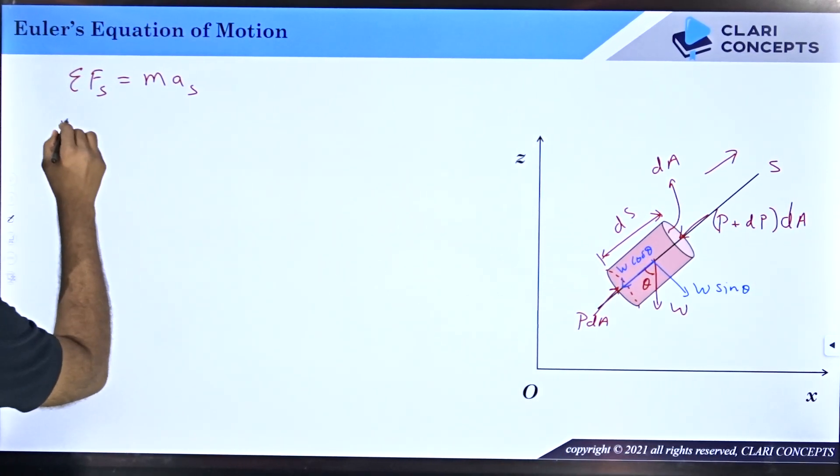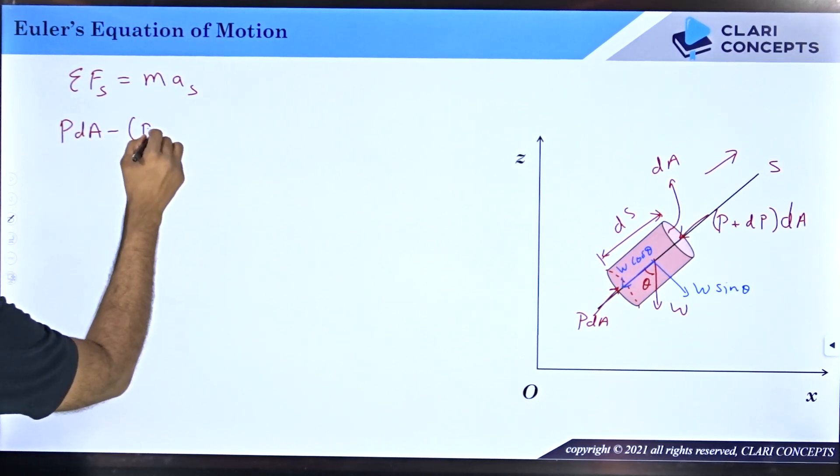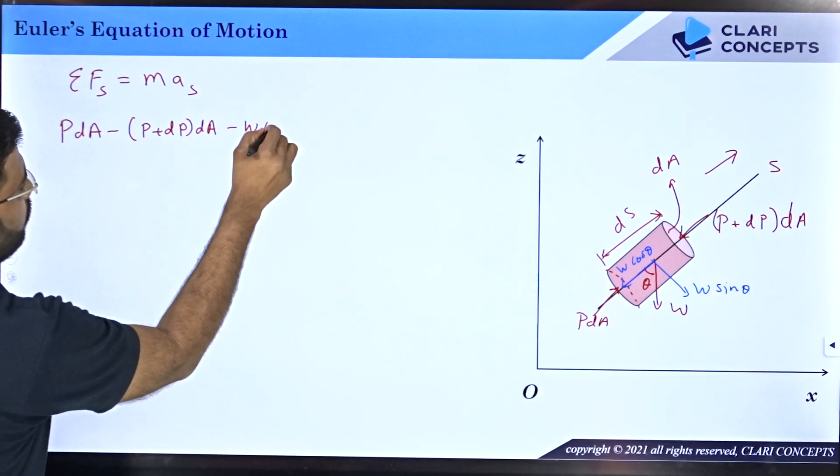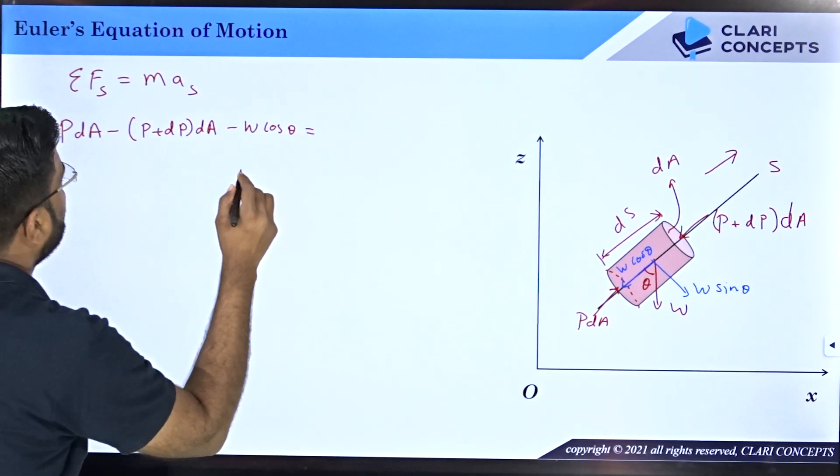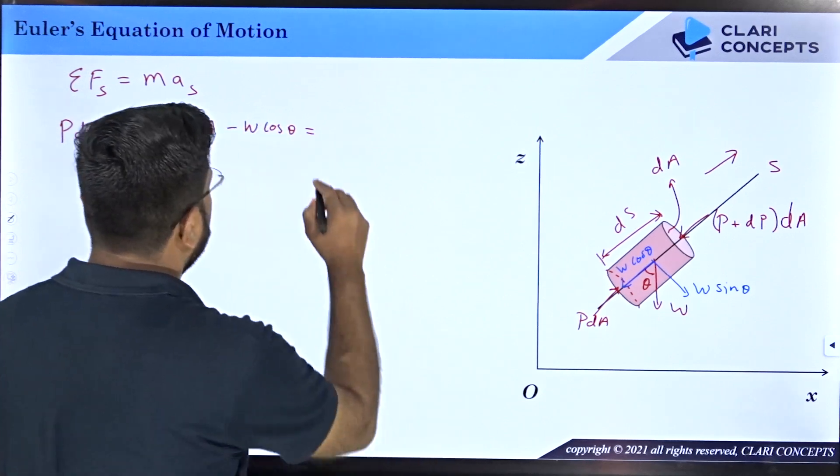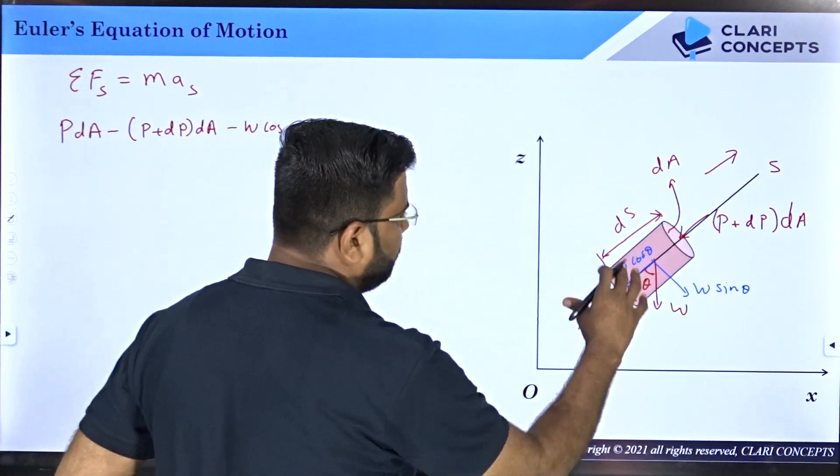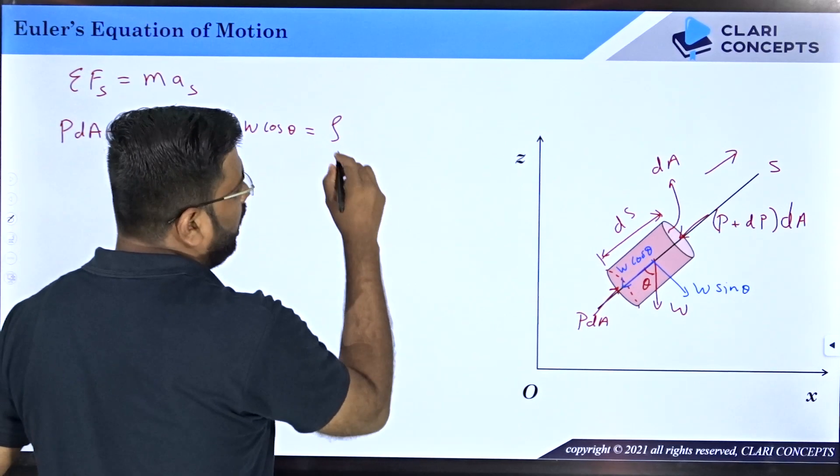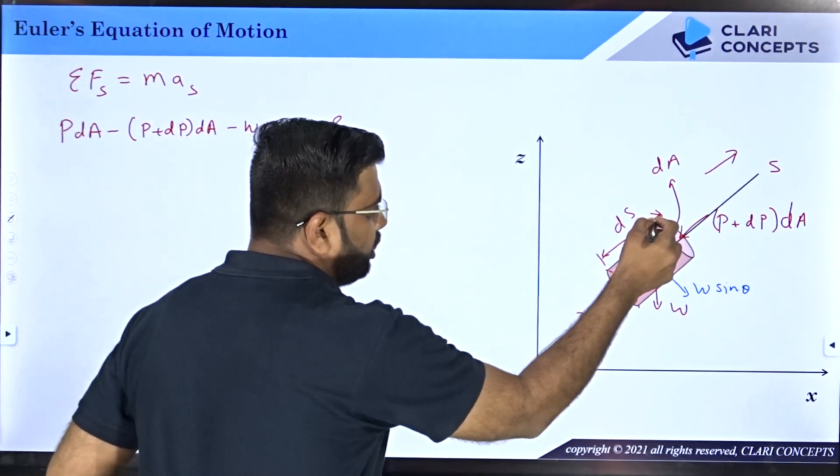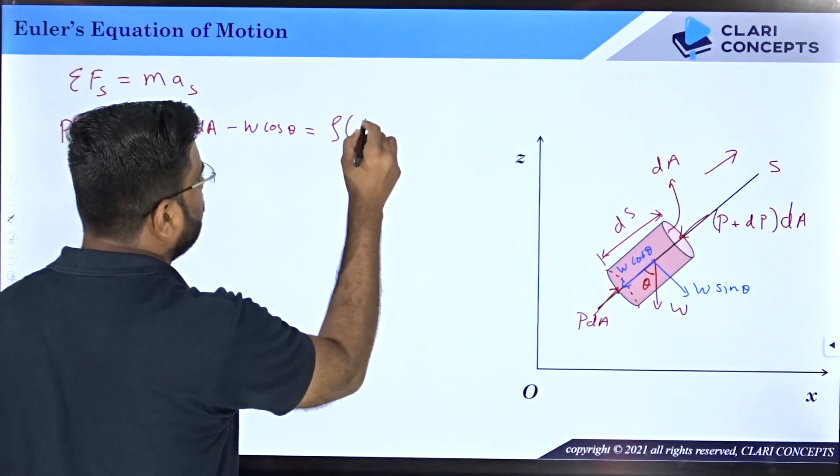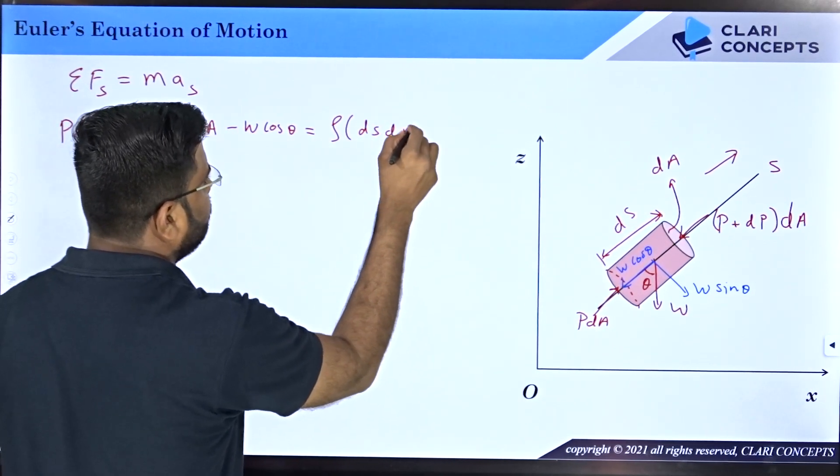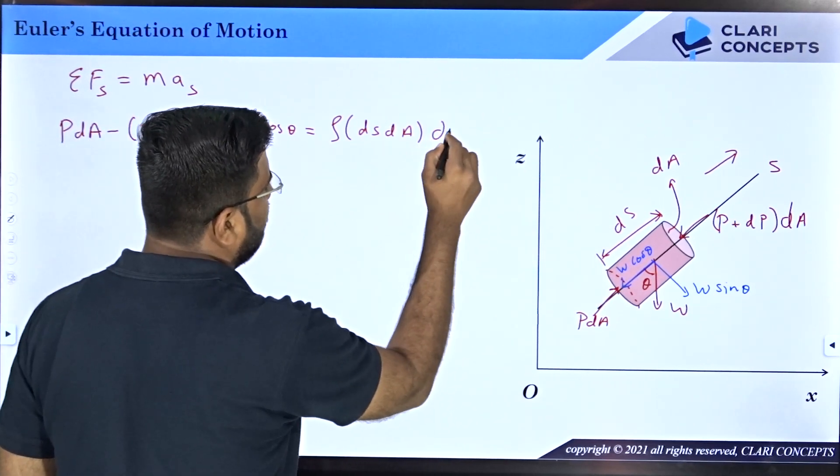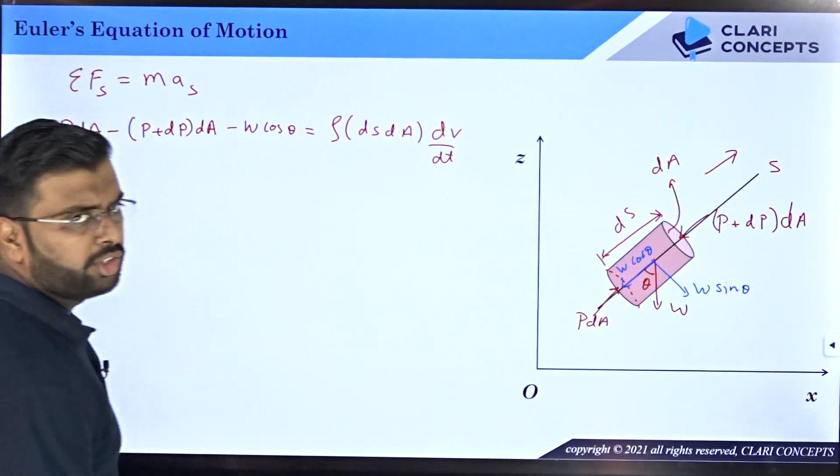So now let me put the values. I can say that P dA minus (P plus dP) into dA minus W cos theta should equal mass into acceleration. What is mass? Mass of this element will be volume times density. Density is rho. Volume is dA into dS. So mass is rho dS dA. Acceleration of this element will be dV by dt.